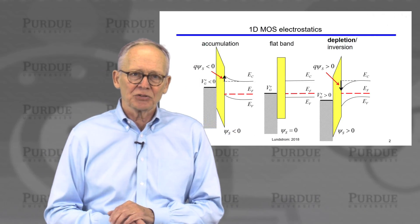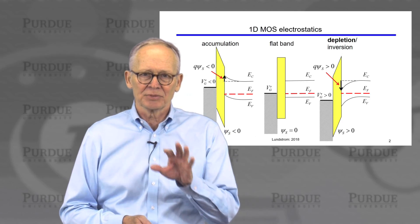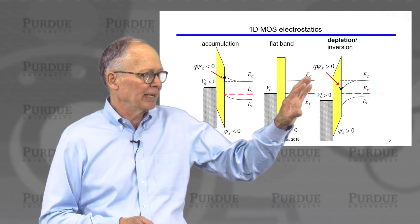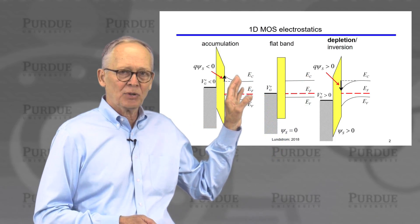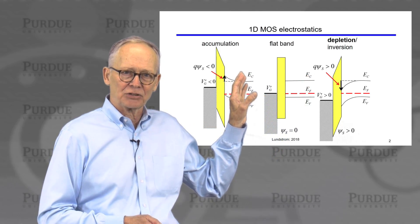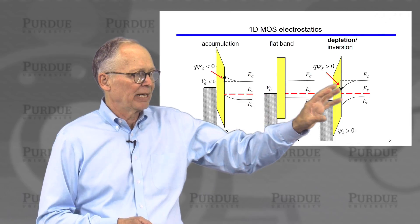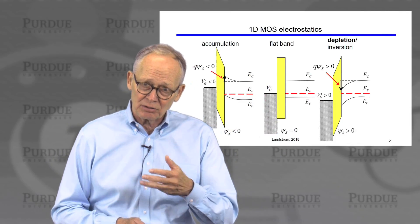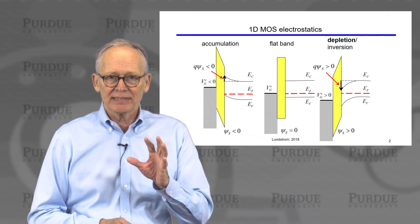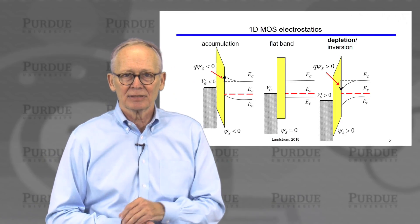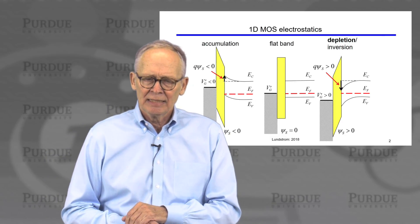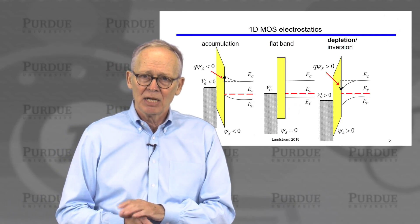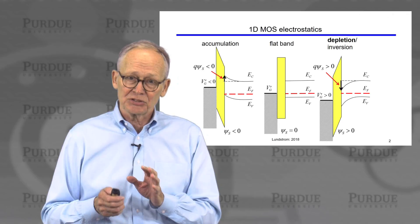Remember, we understood MOS electrostatics in terms of energy band diagrams. Our reference is flat band. When we apply a negative voltage, mobile holes accumulate. When we apply a positive voltage, if it's not bigger than the critical voltage, we deplete the semiconductor. If it's bigger, we also invert. We're going to focus on solving the MOS electrostatic problem when we are in the depletion region.